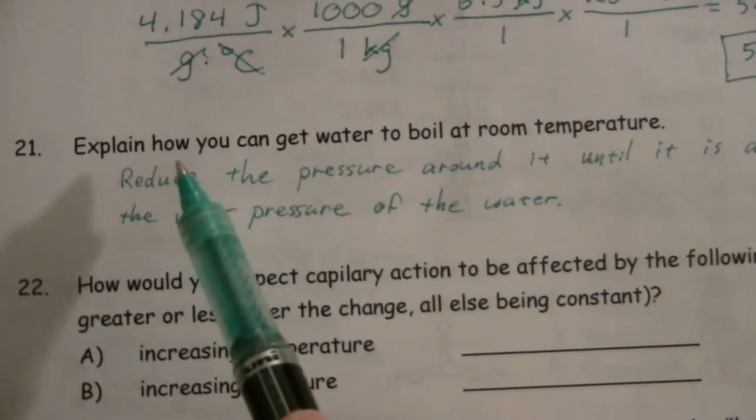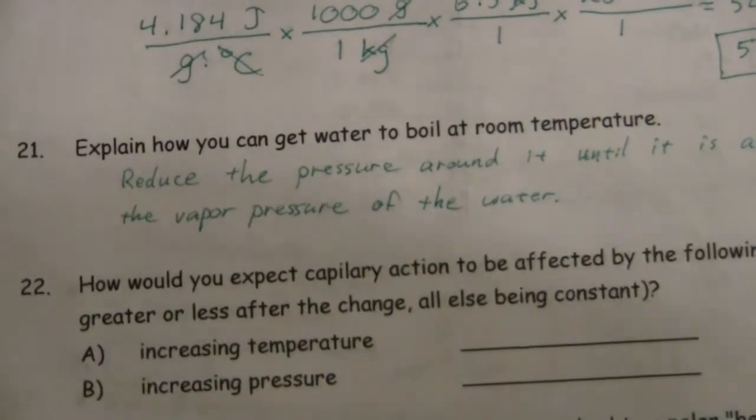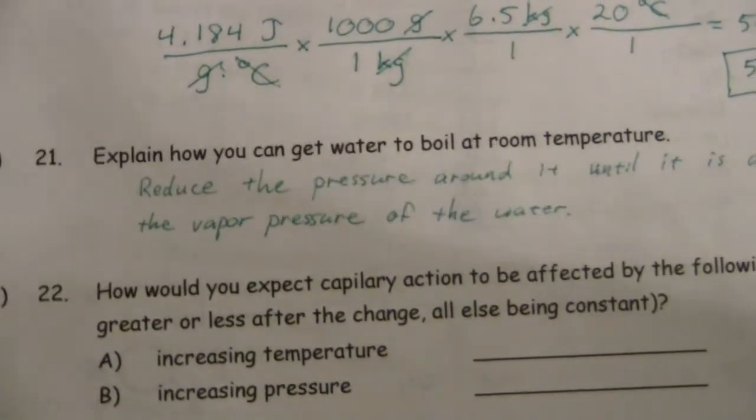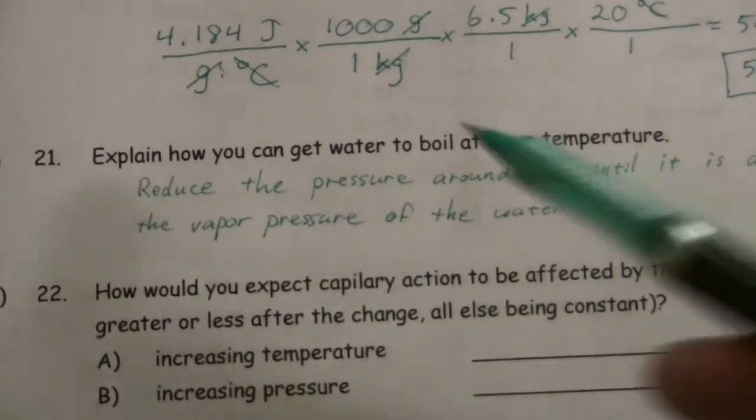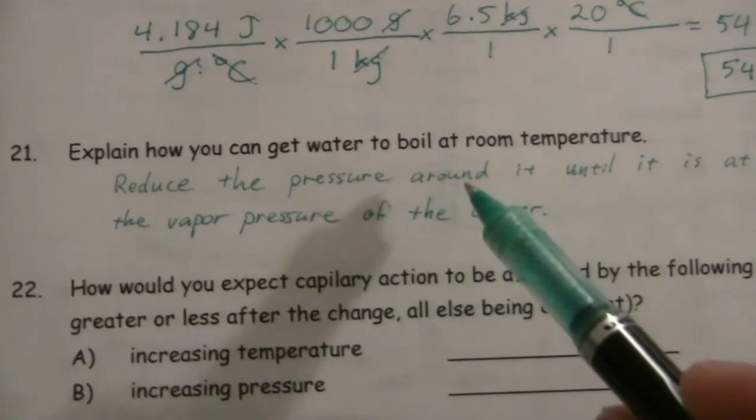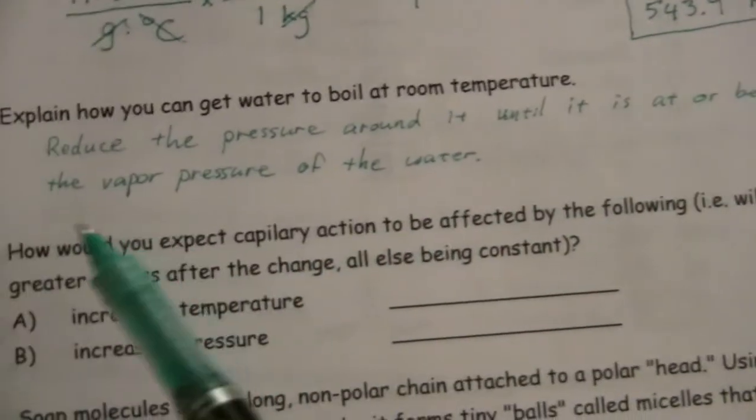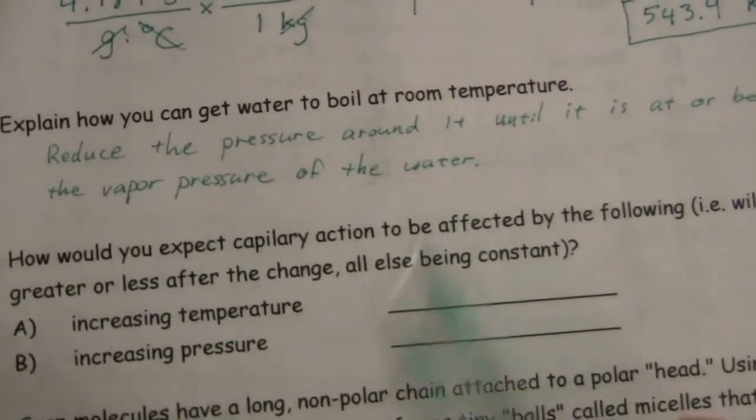So you can either increase the temperature until the vapor pressure increases enough until it gets to atmospheric pressure, that's what we normally do, but you can also reduce the pressure around the water until the pressure is at or below the vapor pressure of the water.